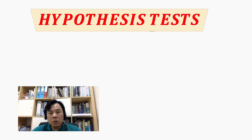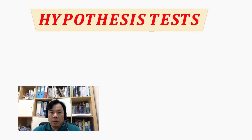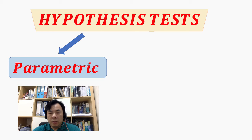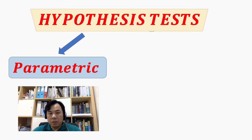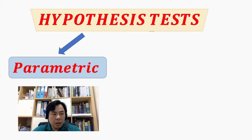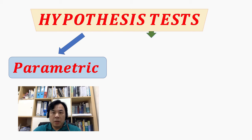Welcome back. Today we're going to talk about non-parametric tests. Before that, just to give you a summary of all the categories found under hypothesis testing. We have already done one part of hypothesis testing which is known as the parametric test. In general, parametric test is the test about the population mean or the population standard deviation. Some of the tools we have used to carry out this parametric test are normal distributions, t-test, or chi-square test.